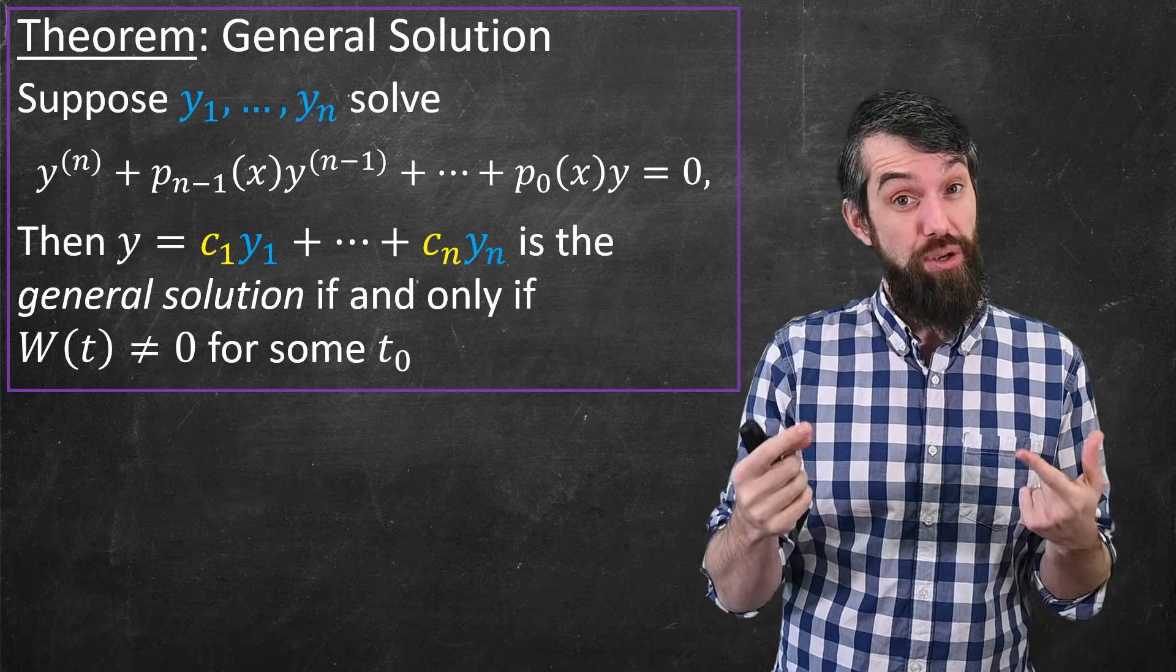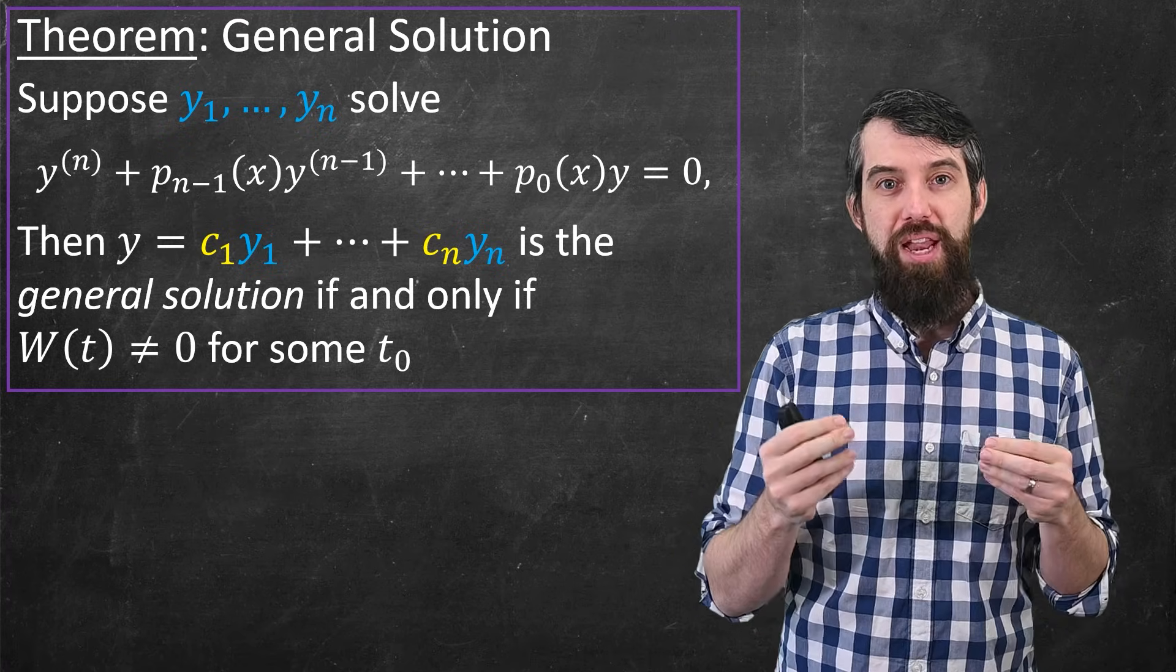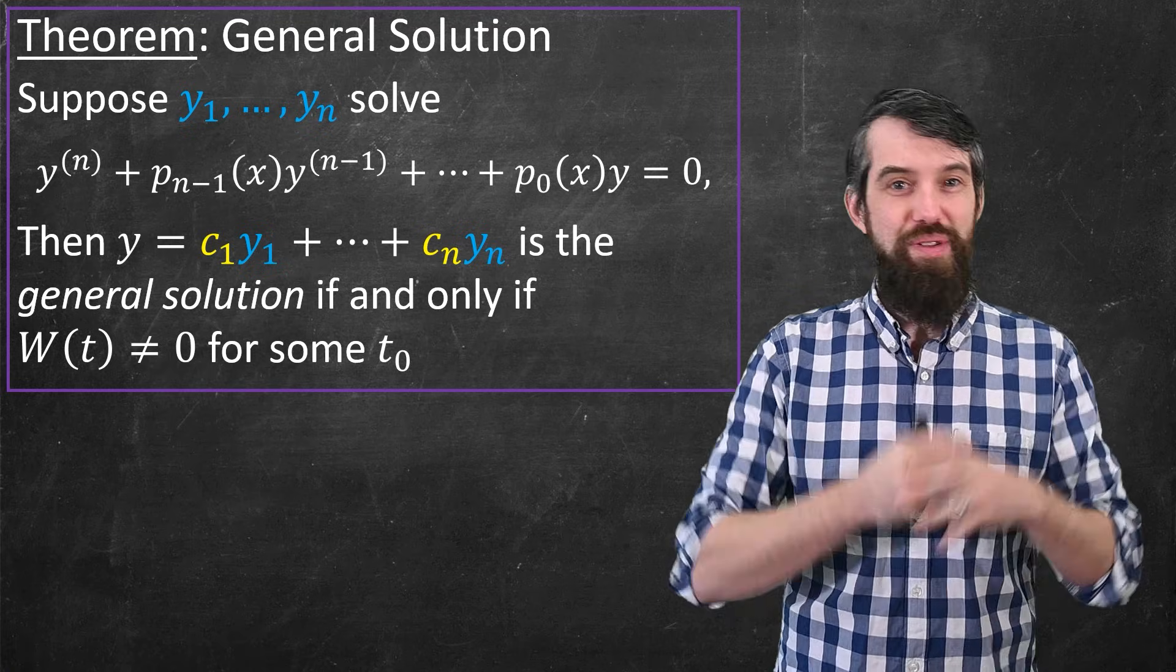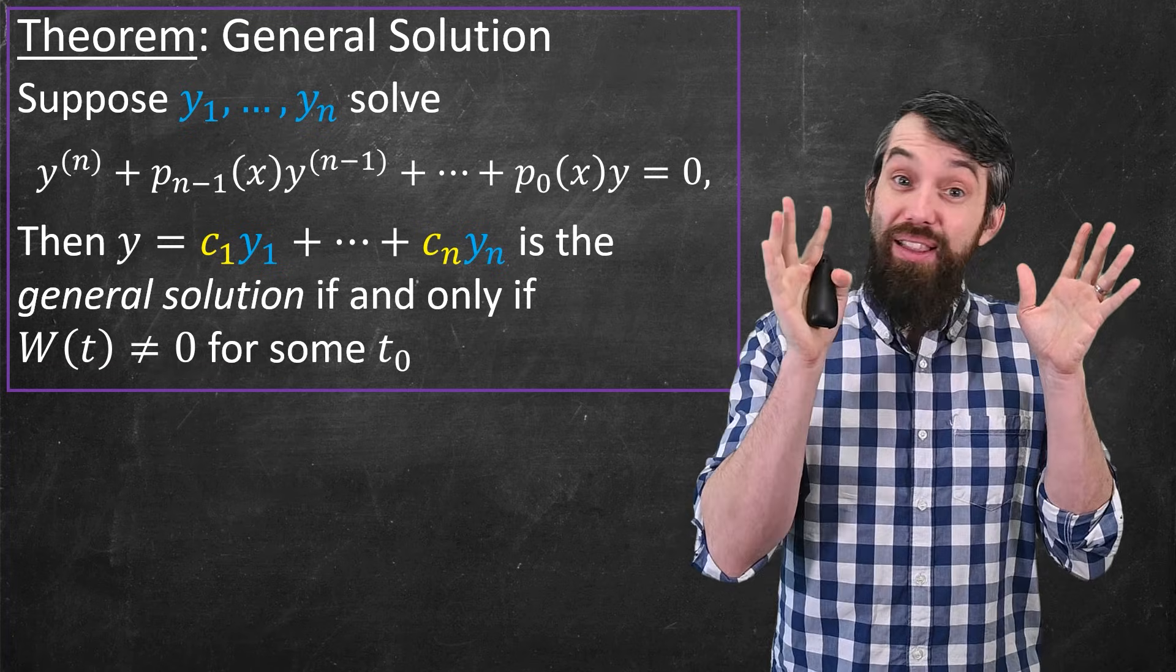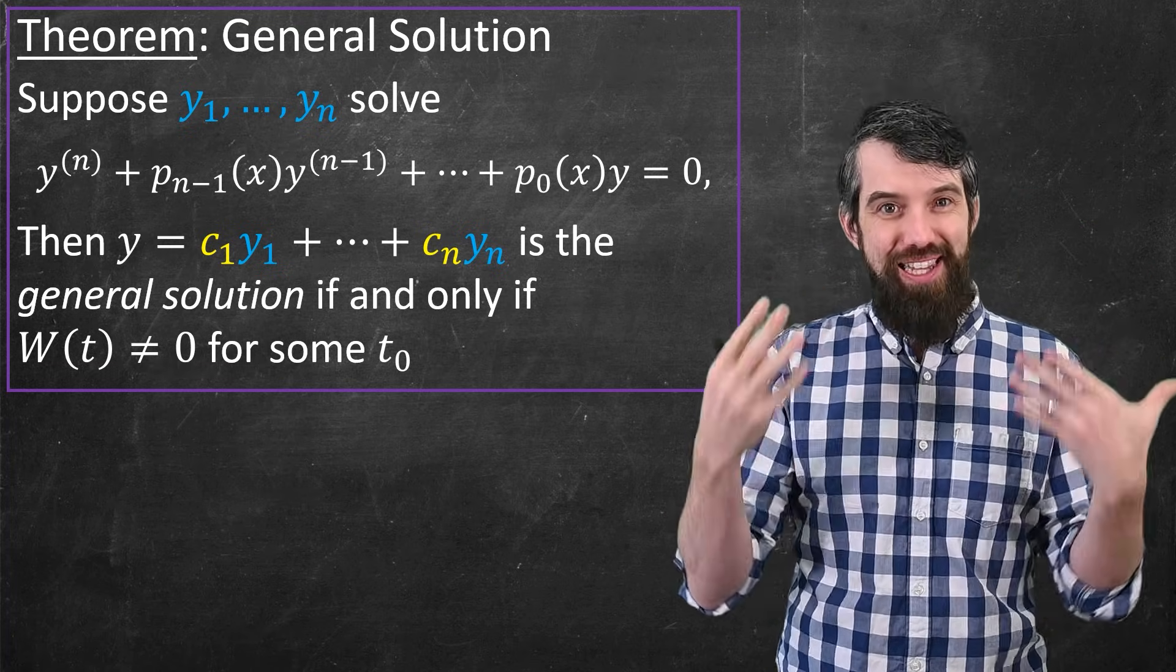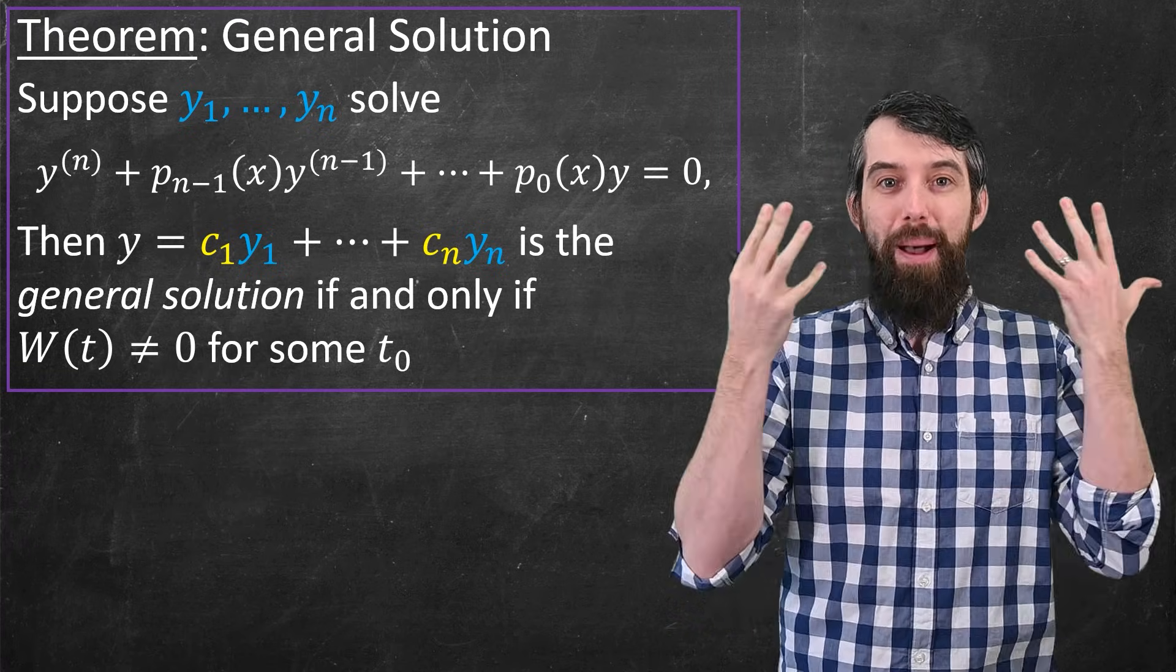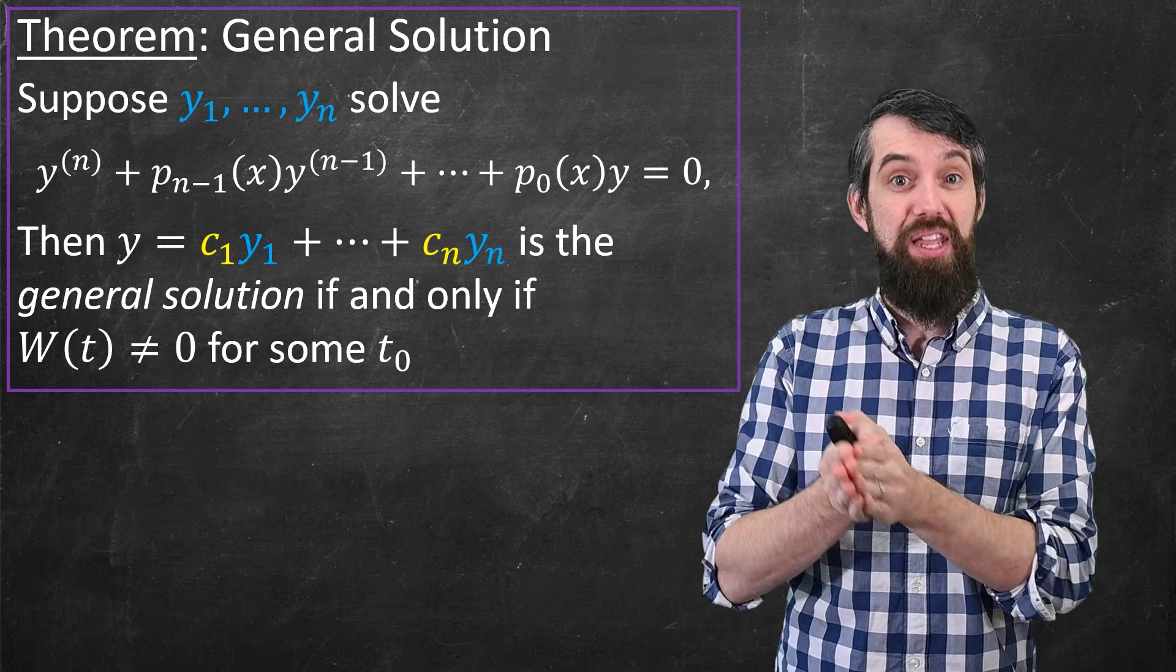If you had n initial conditions as well, you could substitute in and figure out the values of the constants. Now for those of you that know a bit of linear algebra, I want to make the analogy a little bit stronger. We have this wonderful theorem in linear algebra that says, suppose you have n linearly independent vectors. Well, if you live in n dimensions, then the linearly independent vectors form a basis, which means any vector could be written in terms of those n linearly independent vectors.